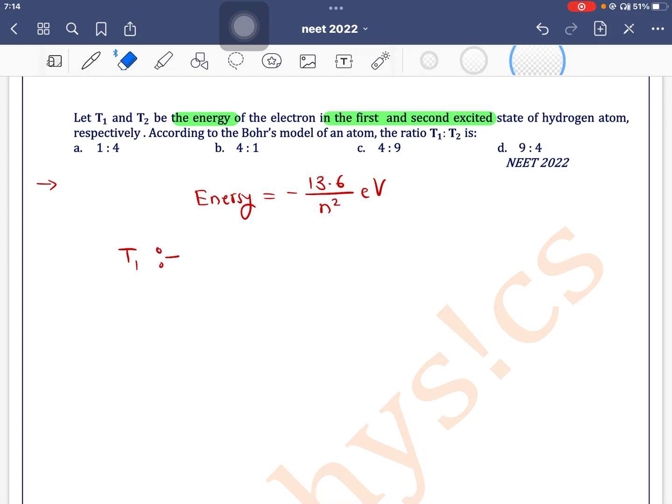First excited state means n is equal to 2, and second excited state means n is equal to 3.